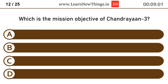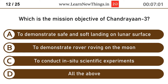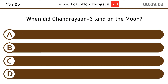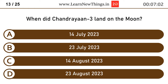Which is the mission objective of Chandrayaan 3? All the above. When did Chandrayaan 3 land on the moon? 23rd August 2023.